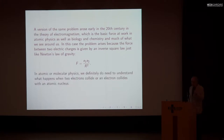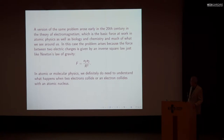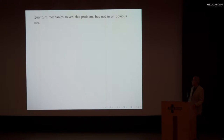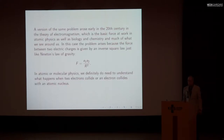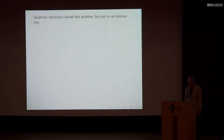In atomic or molecular physics, we definitely do need to understand what happens when two electrons collide, or an electron collides with an atomic nucleus. Physicists of 100 years ago had this problem, and it was solved by inventing quantum mechanics. But quantum mechanics did not solve it in an obvious way.